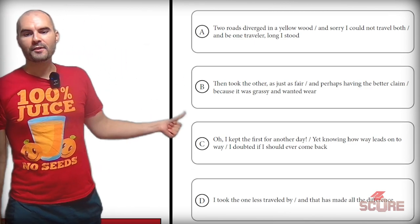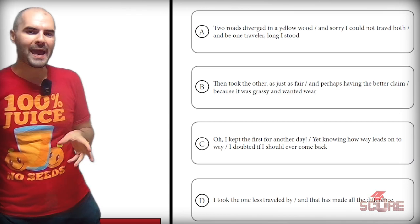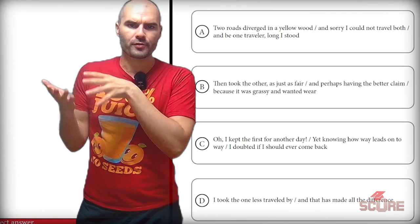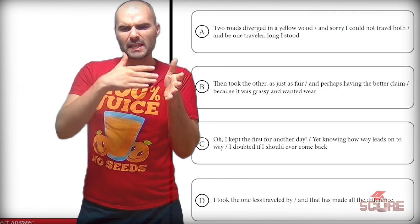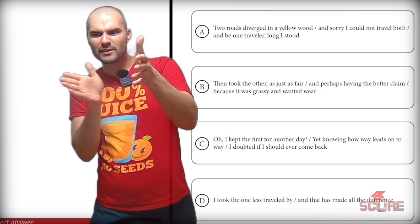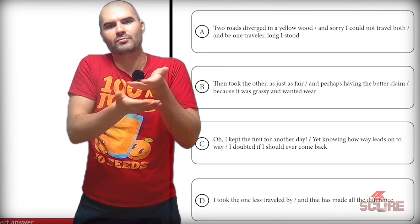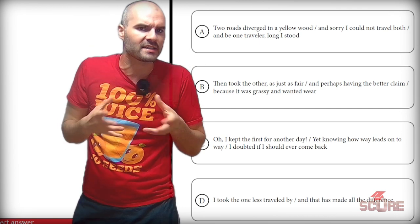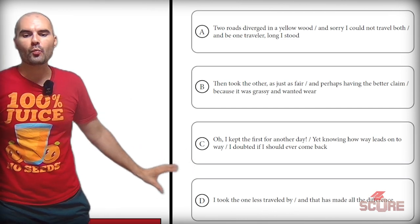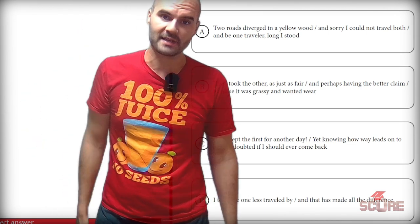Option C says: 'Oh, I kept the first for another day, yet knowing how way leads on to way, I doubted if I should ever come back.' I think this might be the right answer — first, it says you can keep the road for another day, like you could always do the other thing later. And then it says way leads on to way, I doubted if I'd ever come back — almost suggesting that if you take one way, it might end up leading to the other way anyway, so it doesn't matter which you choose. Option D says: 'I took the one less traveled by, and that has made all the difference' — that clearly doesn't support the claim. That leaves us with C as our best answer.